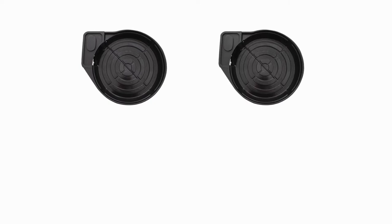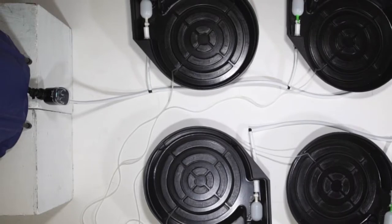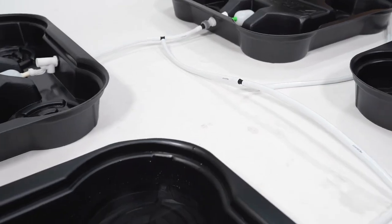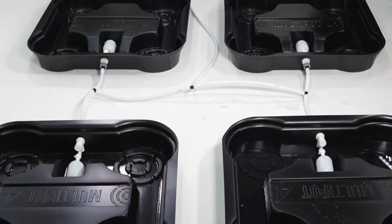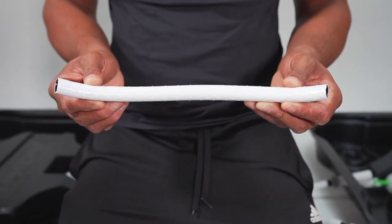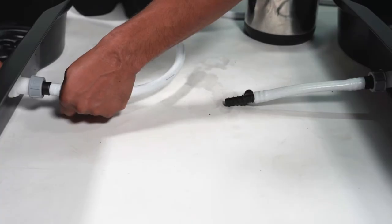Space the Megapots out in your desired configuration. In this video, we've used 4 Megapots in a square configuration, but you can choose any configuration that fits your grow area. Next, run and cut all piping to the necessary lengths and connect it using the joints provided in your kit.